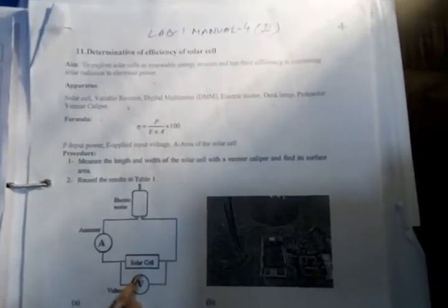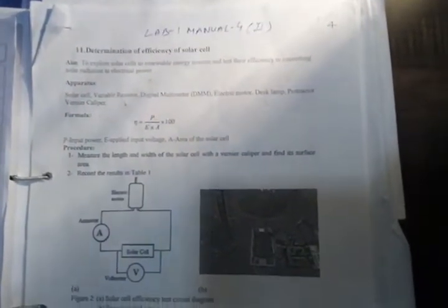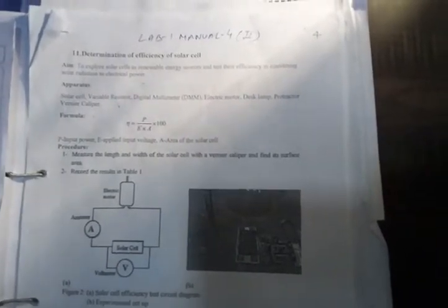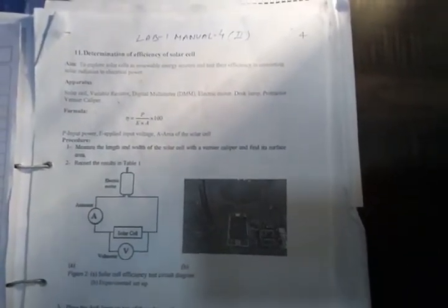To calculate the efficiency of the solar cell, we need the ratio of output to input power. To calculate the input power, we need the area of the solar cell. We can measure the module area of our photovoltaic cell with the help of a ruler or scale. Here I am using a simple scale to find out the area of the photovoltaic cell.